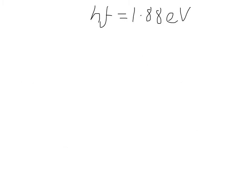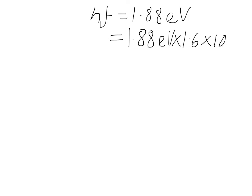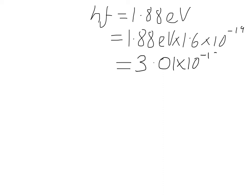We've established that hf equals 1.88 electron volts, so we need to convert that to joules — to base units — before doing any more calculations. Remember: 1 electron volt equals 1.6 times 10 to the minus 19 joules. So we multiply 1.88 by 1.6 times 10 to the minus 19, and we end up with an energy of 3.01 times 10 to the minus 19 joules.